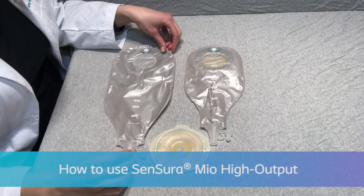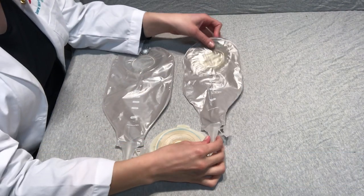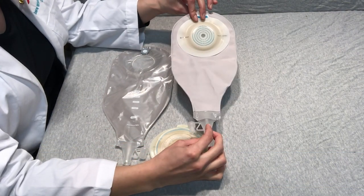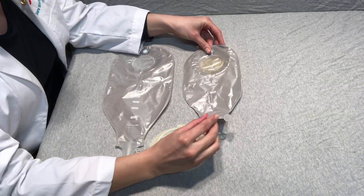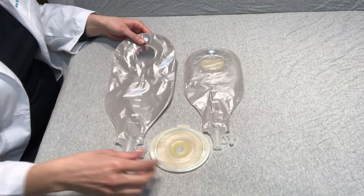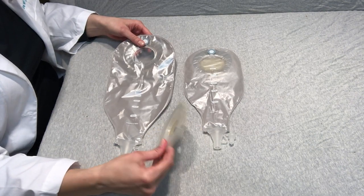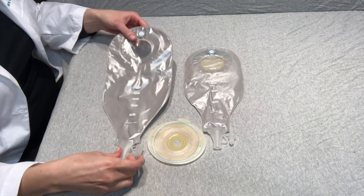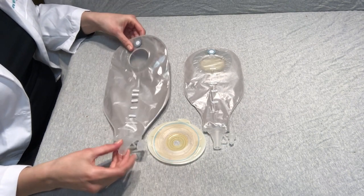I have two types of high output pouches here. The first one is our one-piece convex high output with a soft outlet. The second one I have is a two-piece flex with a convex barrier high output pouch with our tap outlet.